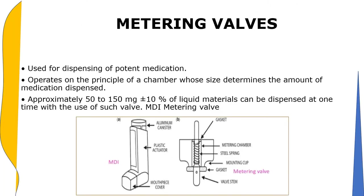Metering valves are used for dispensing potent medication and operate on the principle of a chamber whose size determines the amount of medication dispensed. Approximately 50 to 150 mg (±10%) of liquid materials can be dispensed at one time with such a valve. Here is a picture of an MDI metering valve.